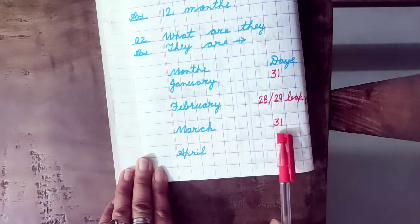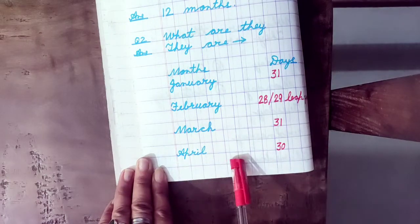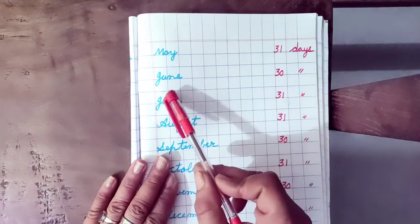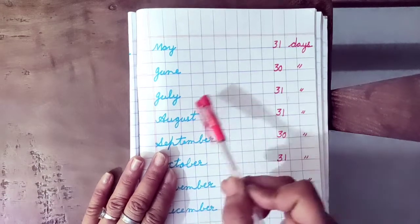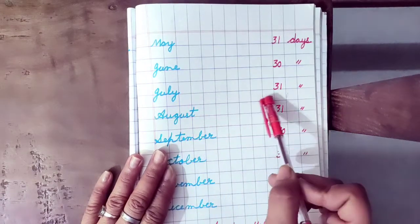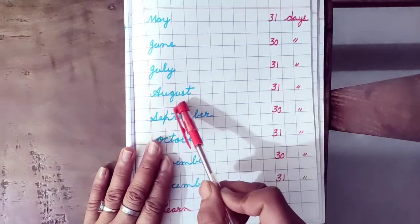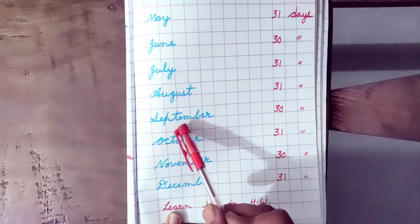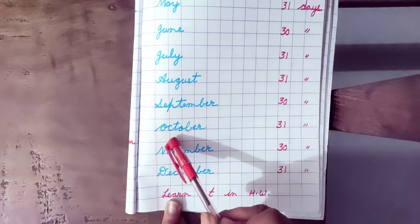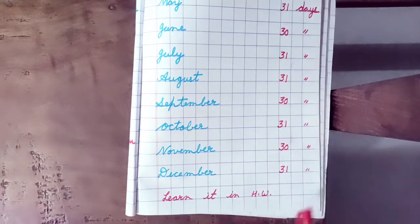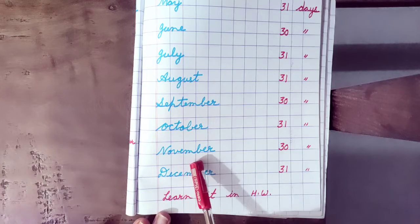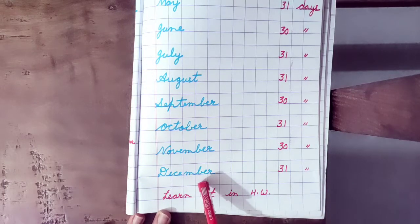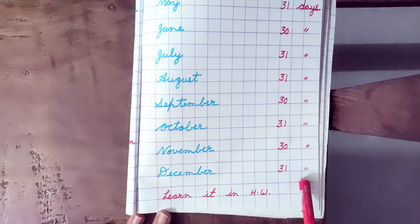M-A-R-C-H March 31 days. April 30 days. M-A-Y May 31 days. J-U-N-E June 30 days. J-U-L-Y July 31 days. A-U-G-U-S-T August 31 days. S-E-P-T-E-M-B-E-R September 30 days. O-C-T-O-B-E-R October 31 days. N-O-V-E-M-B-E-R November 30 days. D-E-C-E-M-B-E-R December 30 days.